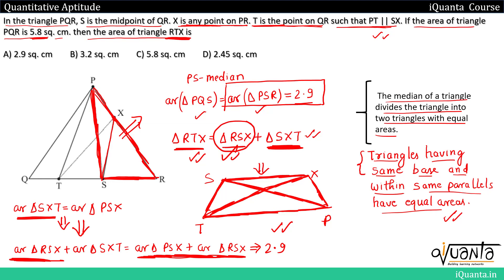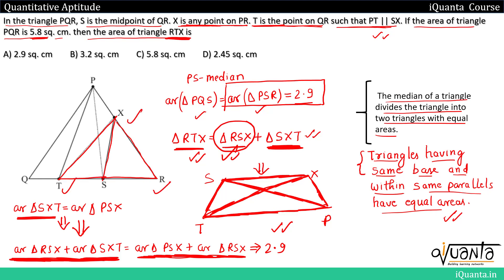So when we add the areas of RSX and SXT, we get triangle RTX. Therefore, the area of triangle RTX equals 2.9 cm². The answer to this question is 2.9 square centimeters, which is option A. We used the property of a median and the property of triangles between parallel lines having equal areas. I hope the explanation is clear — if you have a doubt, please ask. Thank you.